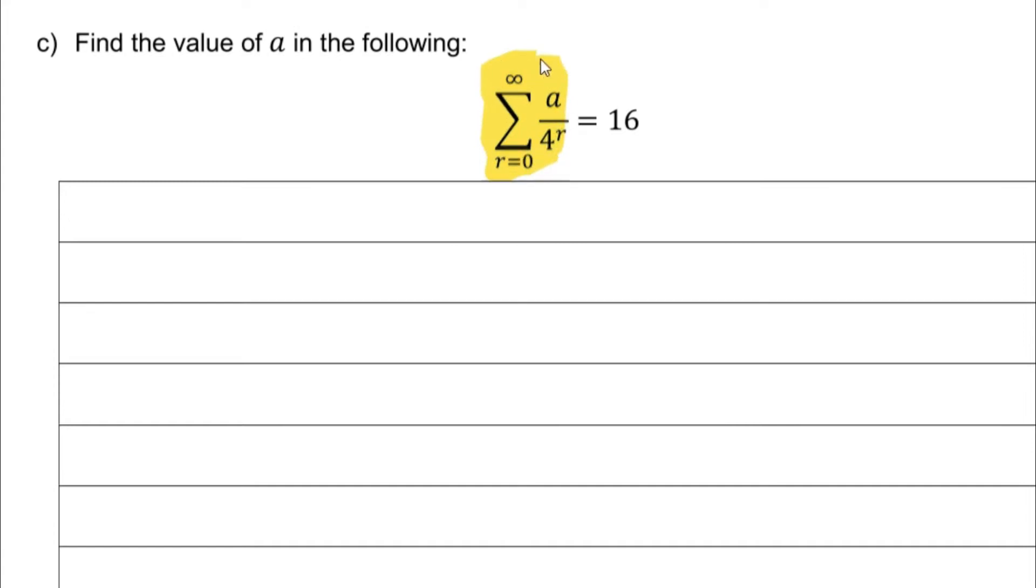This whole sigma gives me 16. Now since we are trying to find the sum of infinity, we understand that S_infinity equals 16. That's what this tells me.